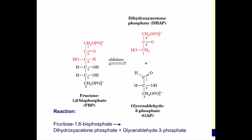In this video, we'll discuss the enzymatic mechanism of class 1 aldolase. Aldolase catalyzes reaction 4 of glycolysis, in which a biphosphorylated hexose is cleaved into two phosphorylated trioses.